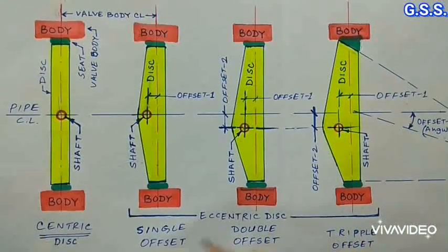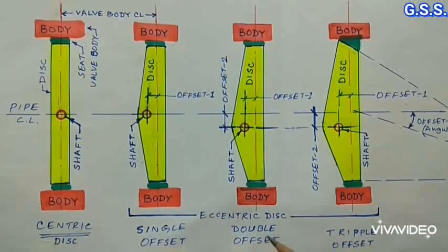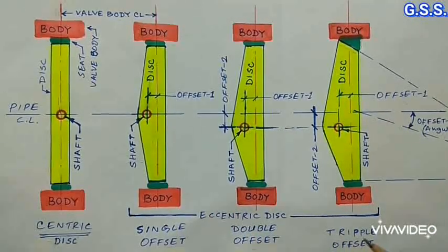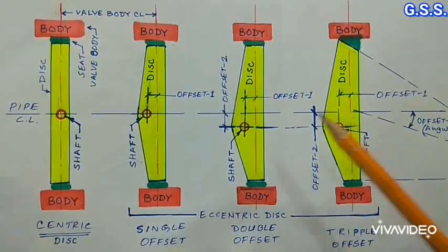In centric and single offset design, pressure drop is low. But in double offset and triple offset design, pressure drop is high because disc area is more.